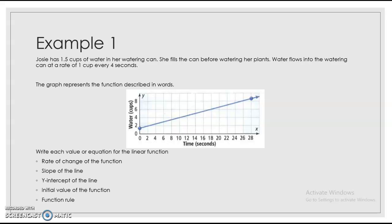A linear function is y equals mx plus b. So here we have Josie has 1.5 cups of water in her watering can. She fills the can before watering her plants, and water flows into the watering can at a rate of one cup for every four seconds. So there's a lot of information just in this, right? We already know this is like a start, right? And so that's our initial value. And then here we have a rate, right? And so that's going to be our slope. We also see the keyword every. So both of these things let us know that we're talking about our slope right there.